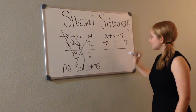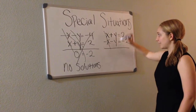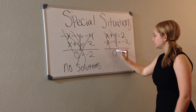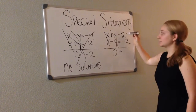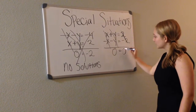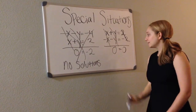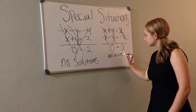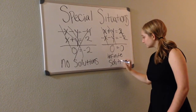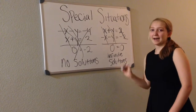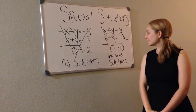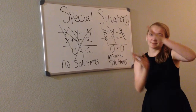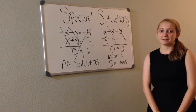On our second special case, the positive X and negative X cancel each other out, as do the positive Y and negative Y. So we have 0 equals 0. This means that we have an infinite number of solutions. It's because on a graph, both of these lines would be the exact same line, so all those points are shared.